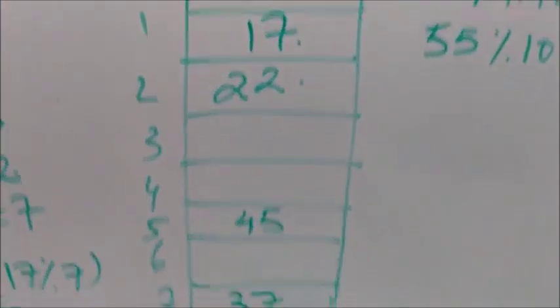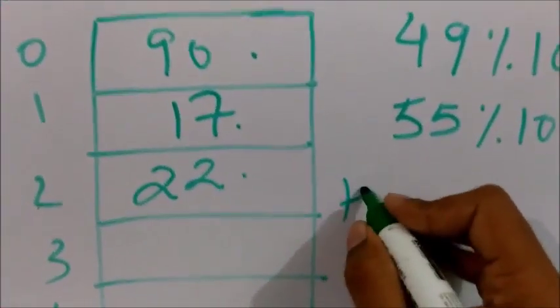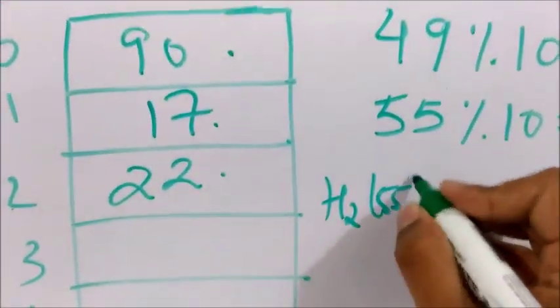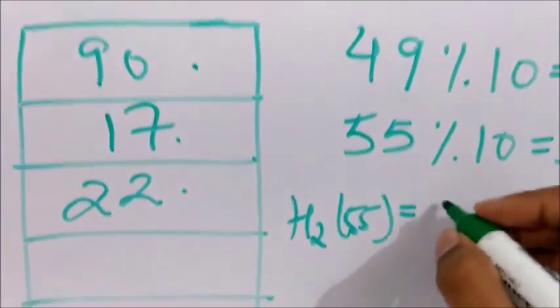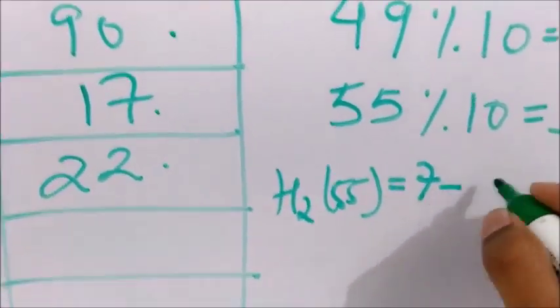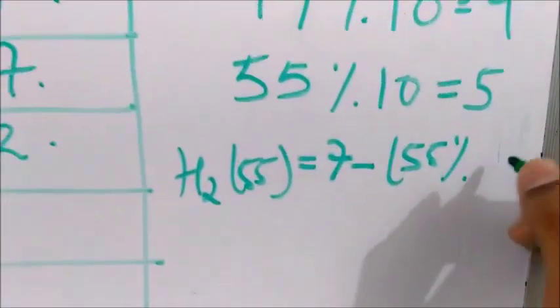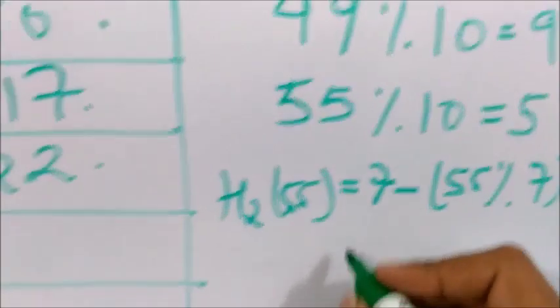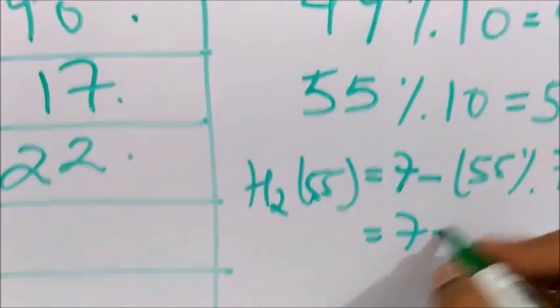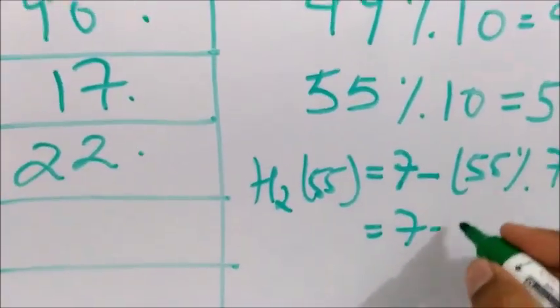Now we will apply second hash function. h2(55) equal to M is 7 minus (55 mod 7), which comes out to be 7 minus 6, which equals 1.